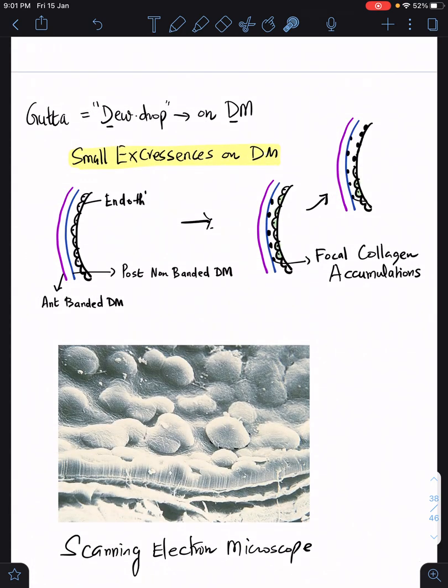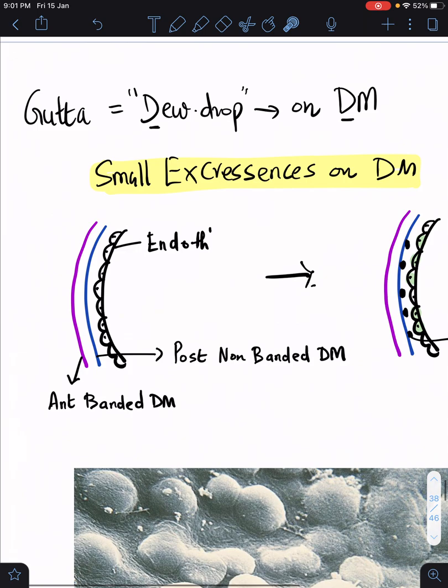We all talk about guttae. What is exactly a gutta? Guttae is the plural form, gutta is the singular. Gutta means a dew drop - D for dew drops on Descemet's membrane. To be more precise, the classical teaching is they are nothing but small excrescences noted on the Descemet's membrane.